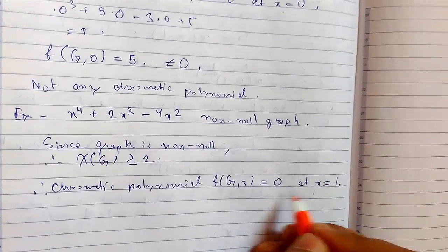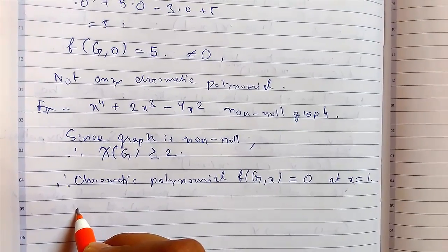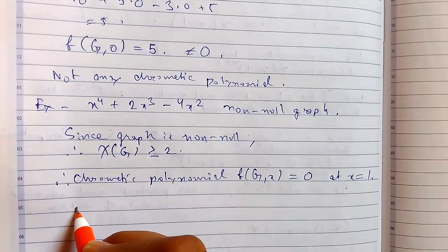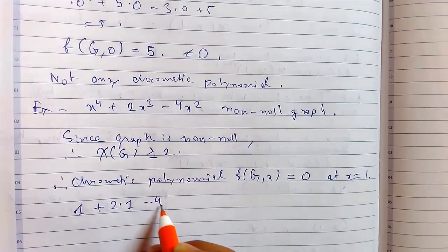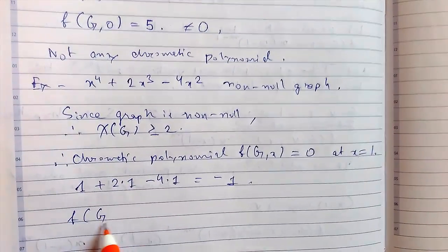So this must be 0 at x equals to 1, but when we put value of x as 1, we get 1 plus 2 times 1 minus 4 times 1, so this is minus 1. So f of g comma 1 for non-null graph we obtained as minus 1.